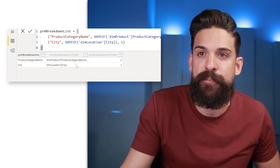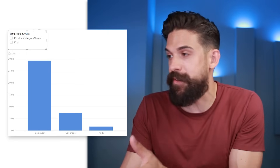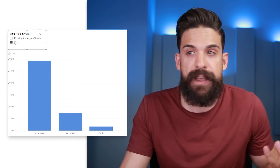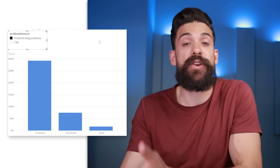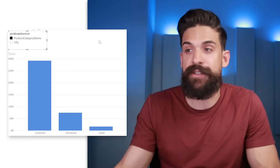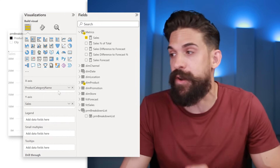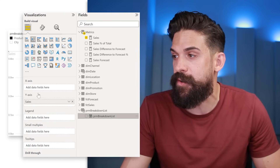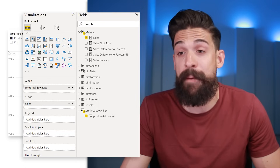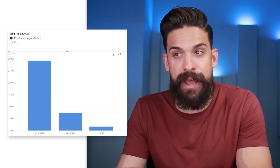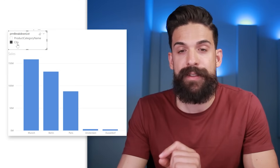Back in the report view, we have a slicer that contains the parameter PRM breakdown list. If we make a selection nothing happens yet, because we are not using the parameter in our visualization. So let's go to the column chart and instead of using product category name, drag PRM breakdown list onto the x-axis. Now we have a breakdown by product category name and we can switch to the city — and that's it. It's simply mind-blowing compared to the old way of setting this up.